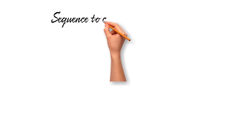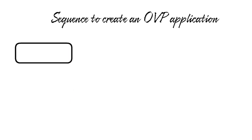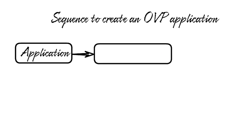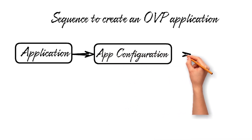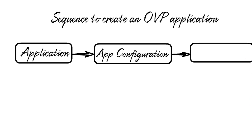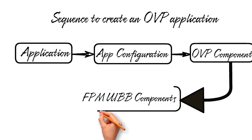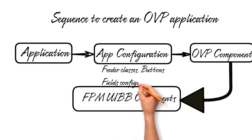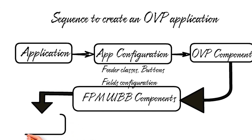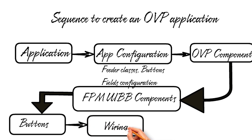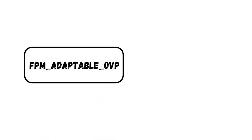We can approve, reject, or save using those buttons. The sequence to create an overview application is: first there will be a WebDynPro application, next there will be an application configuration — the application works with application configuration at runtime — and then it will be linked to the OVP component. The OVP component will have FPM UIBB components, including feeder classes, buttons, feeder fields, and configurations. The final wiring will be done on the UIBB.